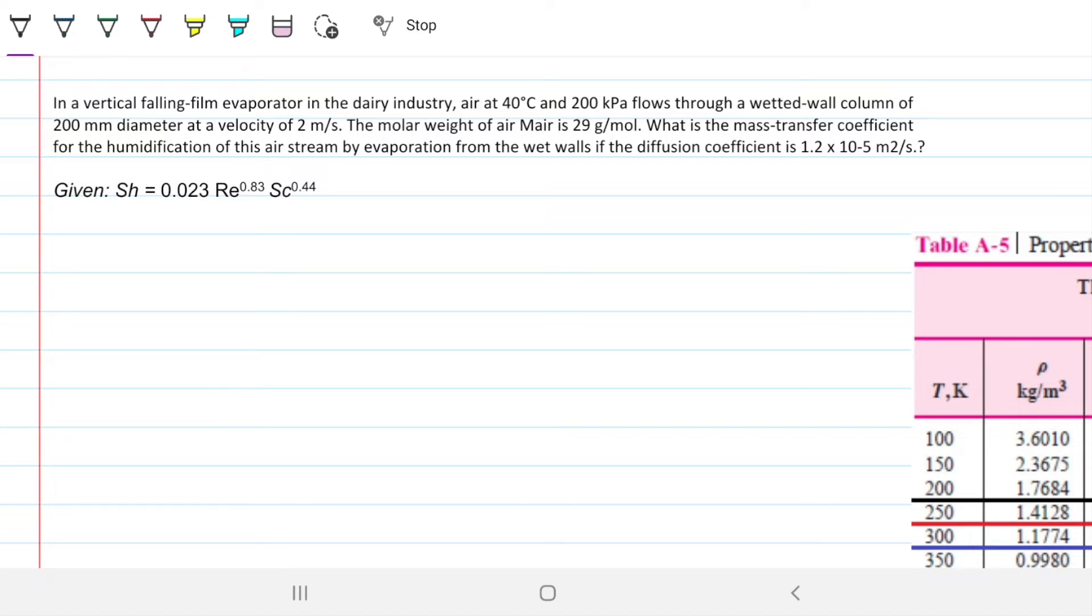We are given a correlation for Sherwood number, which is 0.023 times Reynolds to the 0.83 times Schmidt to the 0.44.